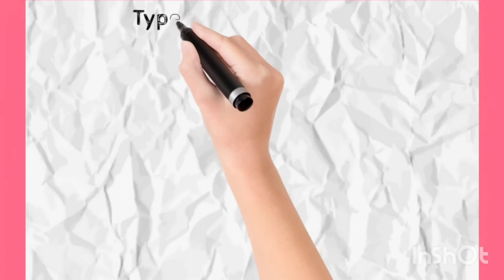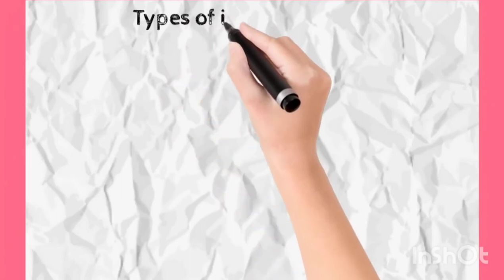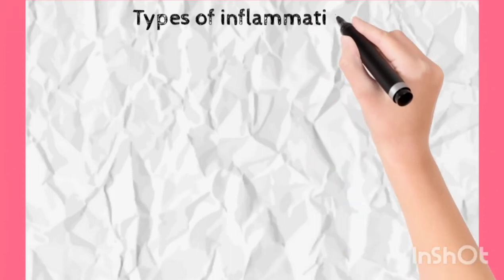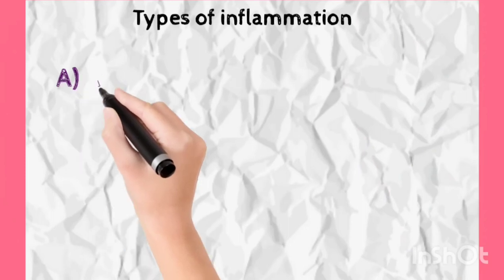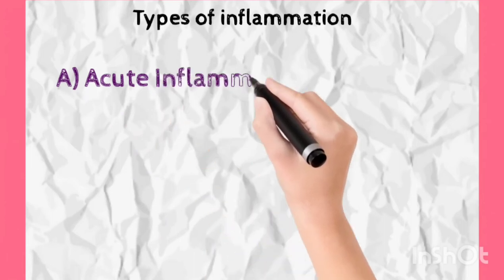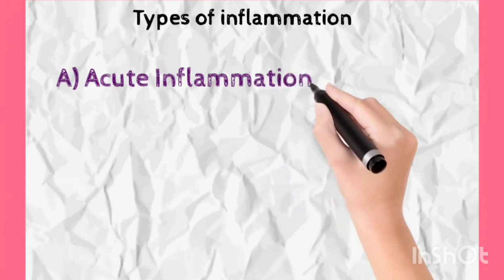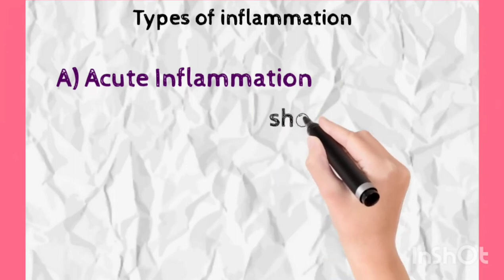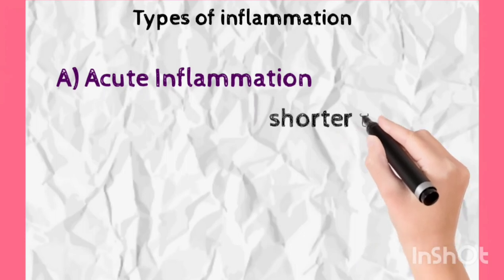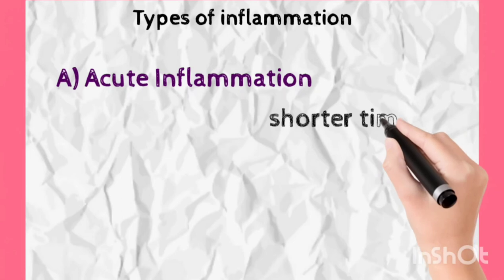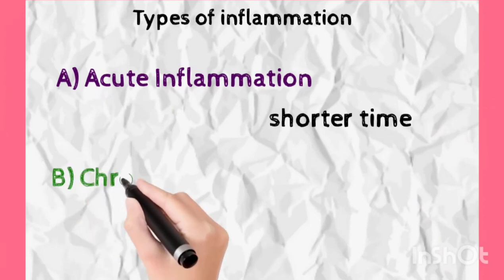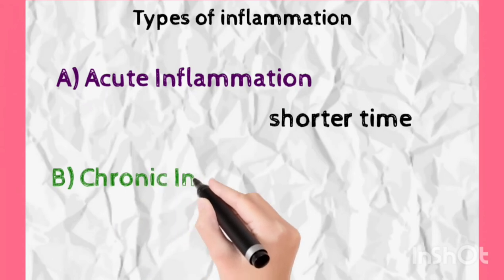Now let us see what are the types of inflammation. We basically divide inflammation roughly into two types, on the basis of duration — though of course other characteristics differ too. The first type is acute inflammation, which persists for only a short duration of time. The second is chronic inflammation, which persists for a longer duration of time. We will look at both types in depth in upcoming videos.